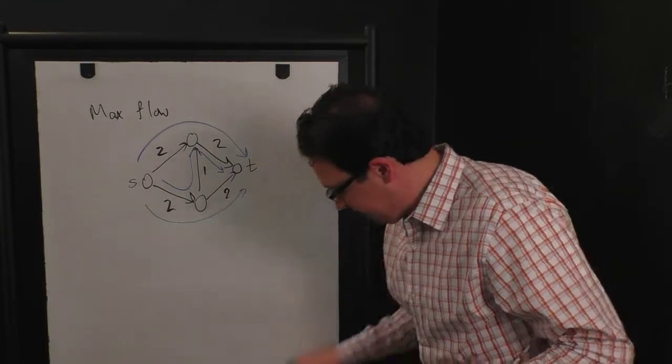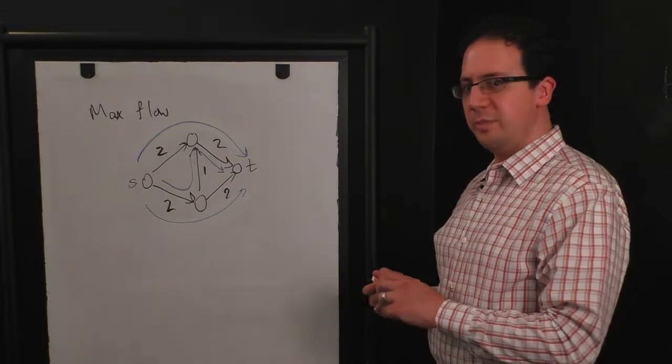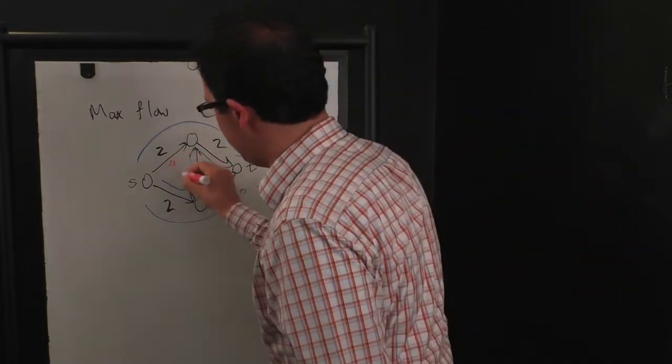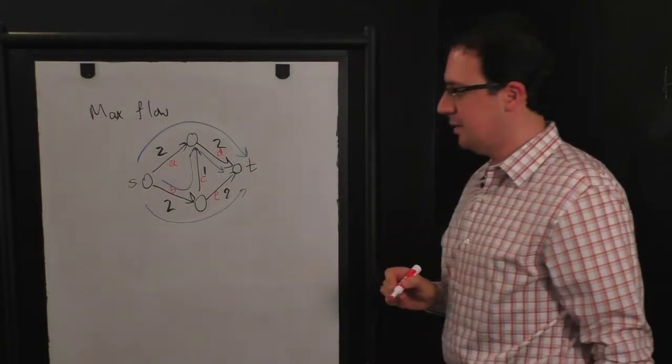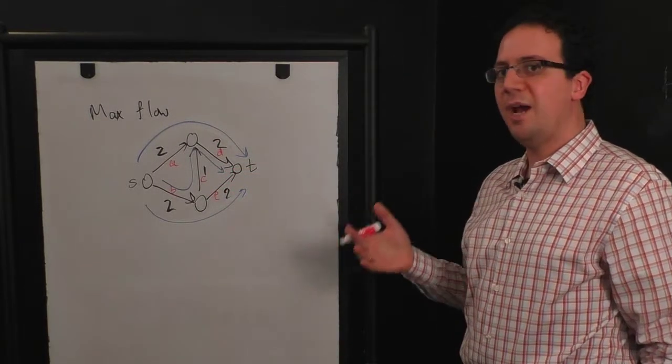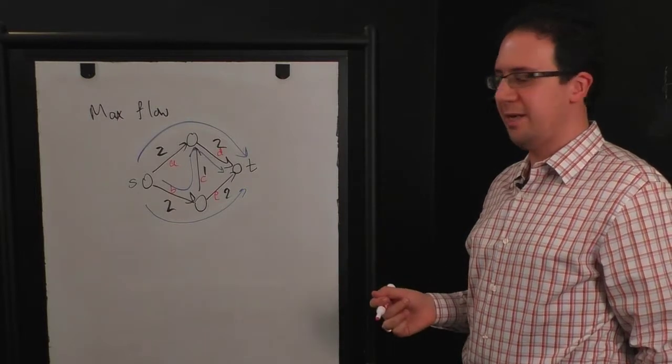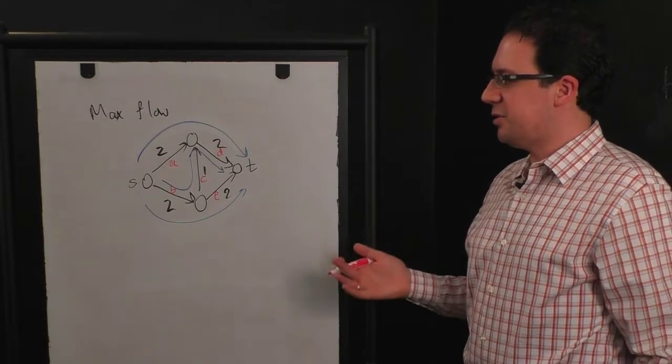So for this, I'm going to give variable names to every edge. So this will be A, B, C, D, and E. And the variable just represents how much flow I'm putting on the edge at any given time. So we have some constraints on these variables.